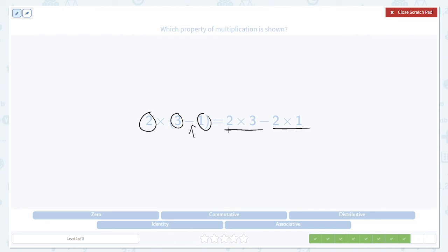Then we join those two products the same way that the 3 and the 1 were originally joined. We see a subtraction on the left, so we get a subtraction on the right. You can distribute multiplication over addition or subtraction, but only those two, addition and subtraction.